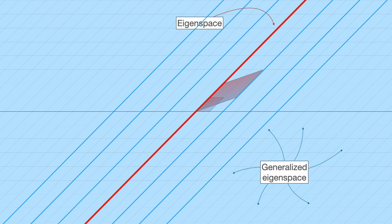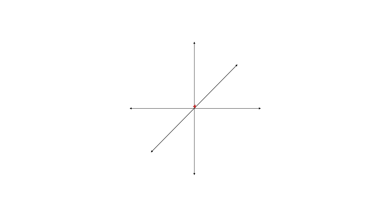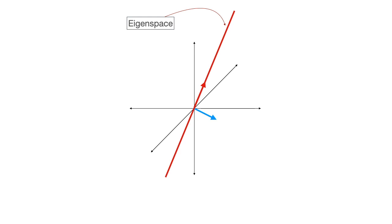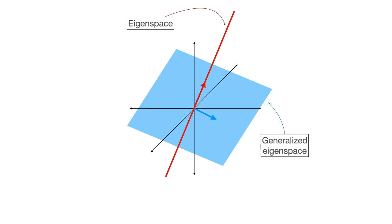It may look like cheating, but if you have higher-dimensional things it makes more sense. Imagine a 3×3 matrix that sends the entire three-dimensional space to itself. If we have an eigenvector and a generalized eigenvector, then the eigenspace is a line that gets sent to itself, and the generalized eigenspace is a plane through both of them that gets sent to itself — and this is non-trivial because we do have a plane inside the 3D space that gets sent to itself. In general, the generalized eigenspace is the space of the smallest dimension that the transformation sends to itself.